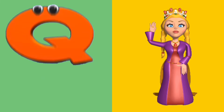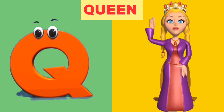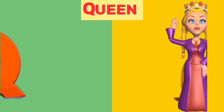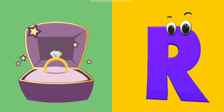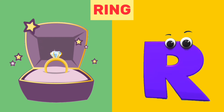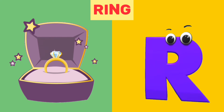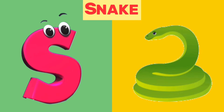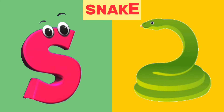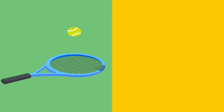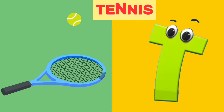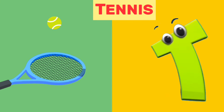Q is for queen. Q, queen. R is for ring. R, ring. S is for snake. S, snake. T is for tennis. T, tennis.